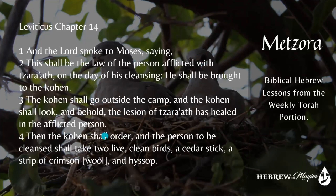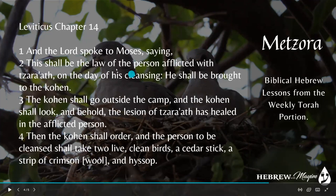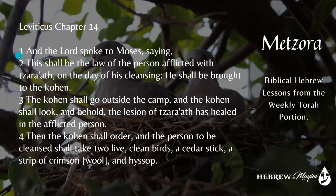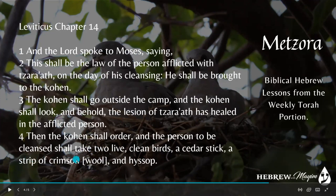That's enough for the Hebrew lesson, but I want to read up to verse 4 and give a little commentary based on Rabbi Nachman. Leviticus chapter 14, starting with the first verse: 'And the Lord spoke to Moses saying, this shall be the law of the person afflicted with Sara'at on the day of his cleansing. He shall be brought to the Kohen. The Kohen shall go outside the camp and look, and behold the lesion of Sara'at has healed in the afflicted person. Then the Kohen shall order and the person to be cleansed shall take two live clean birds, a cedar stick, a strip of crimson wool, and hyssop.'